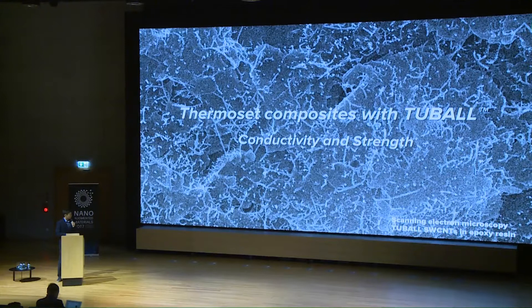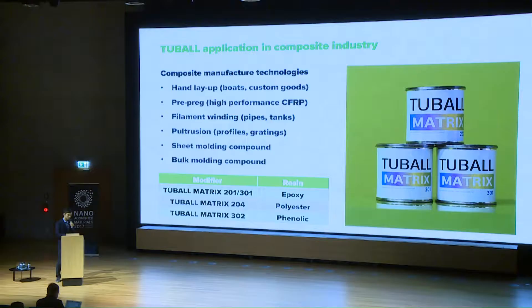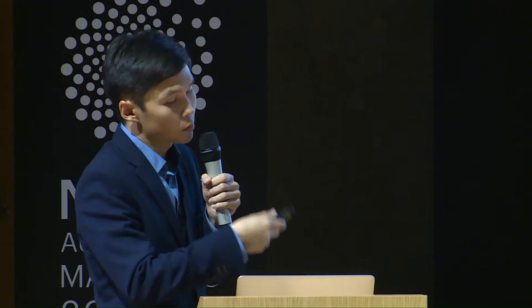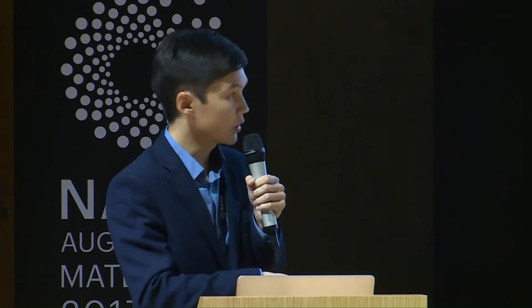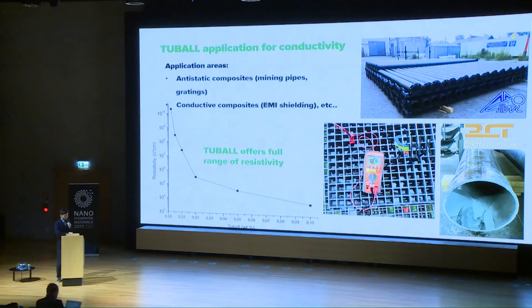Switching to composites: because Tubal forms a conductive and reinforcing network in polymeric materials, we can expect in composites that we will simultaneously enhance resistivity and bring reinforcement to these materials. Currently we can introduce Tubal into composite materials using all basic technologies of composite manufacturing. The solutions are the same as for coatings — Tubal Matrix concentrates which can be diluted in the host matrix, and then you make the composite using this modified resin.